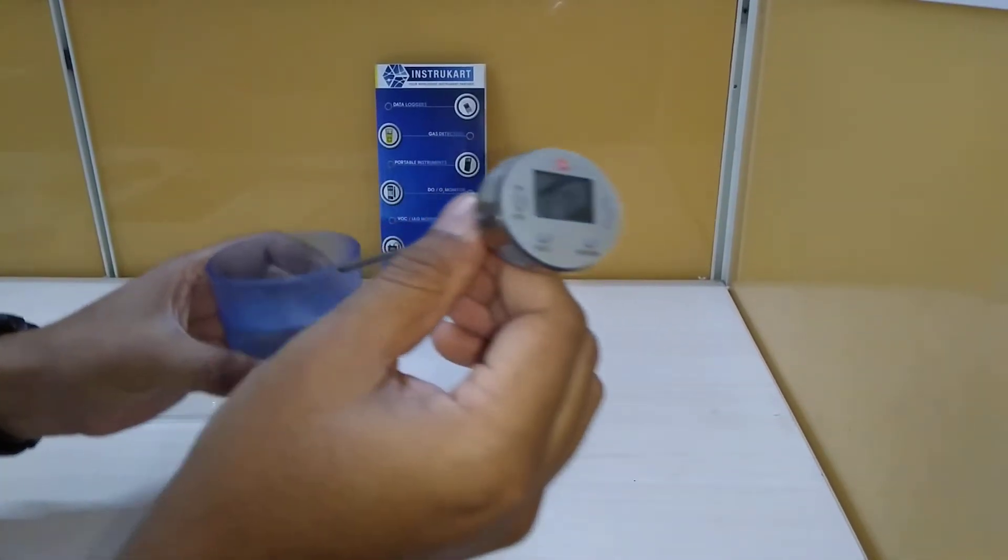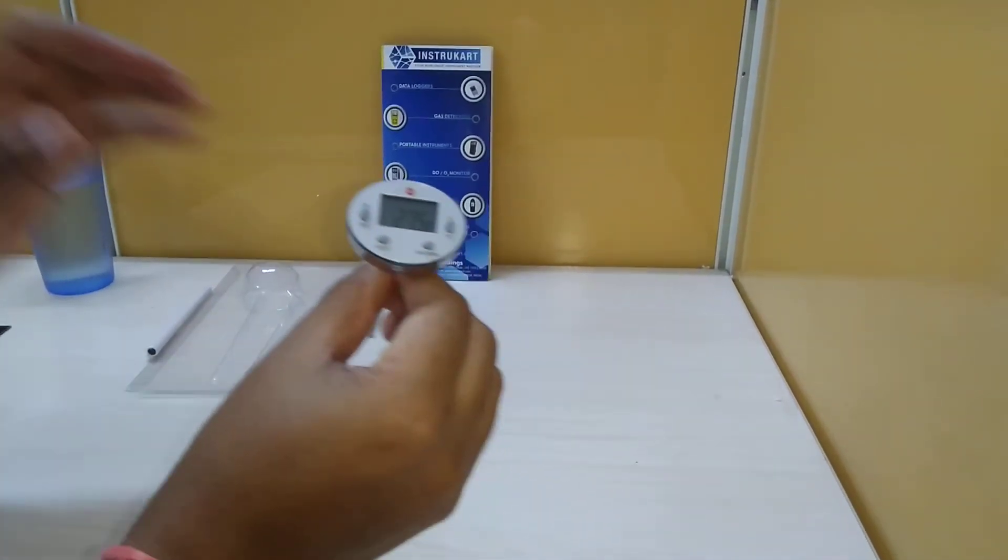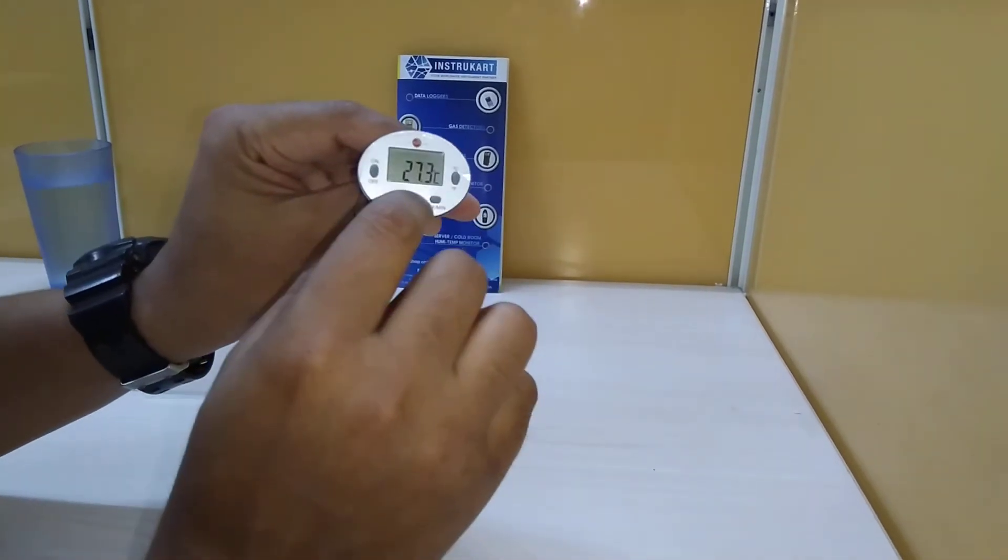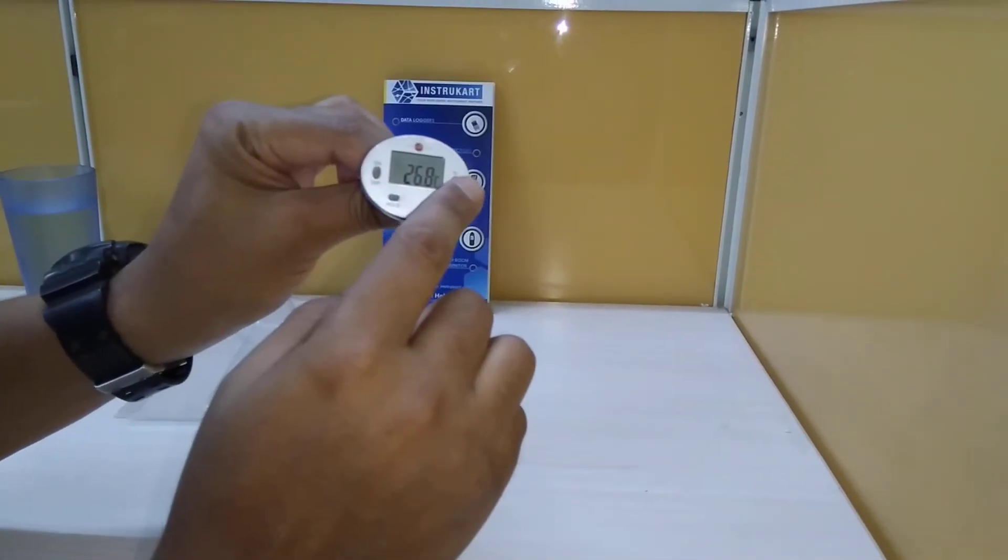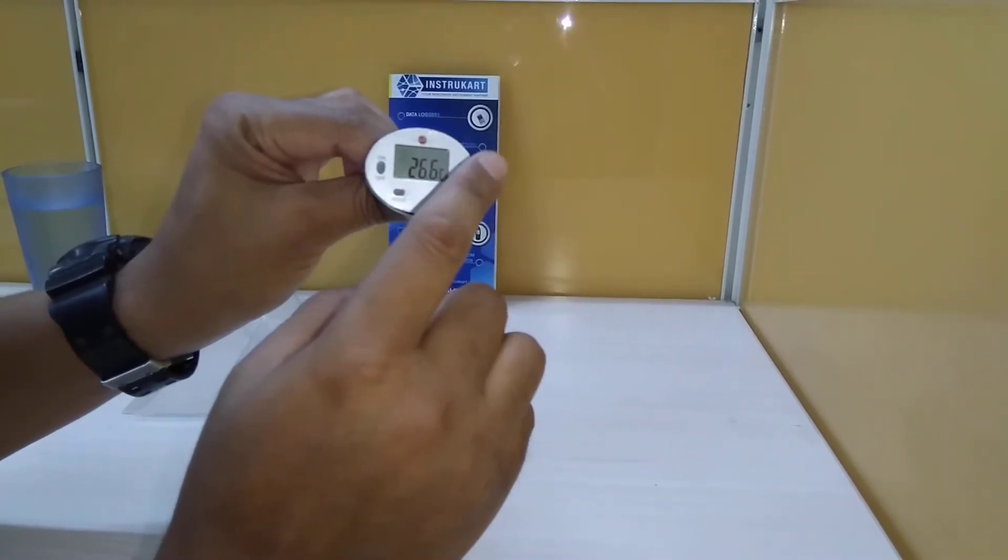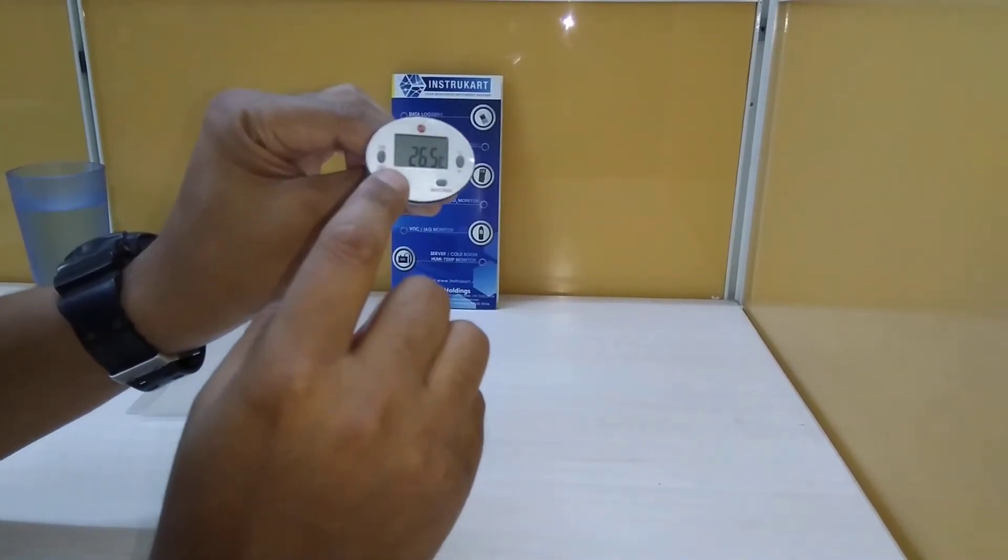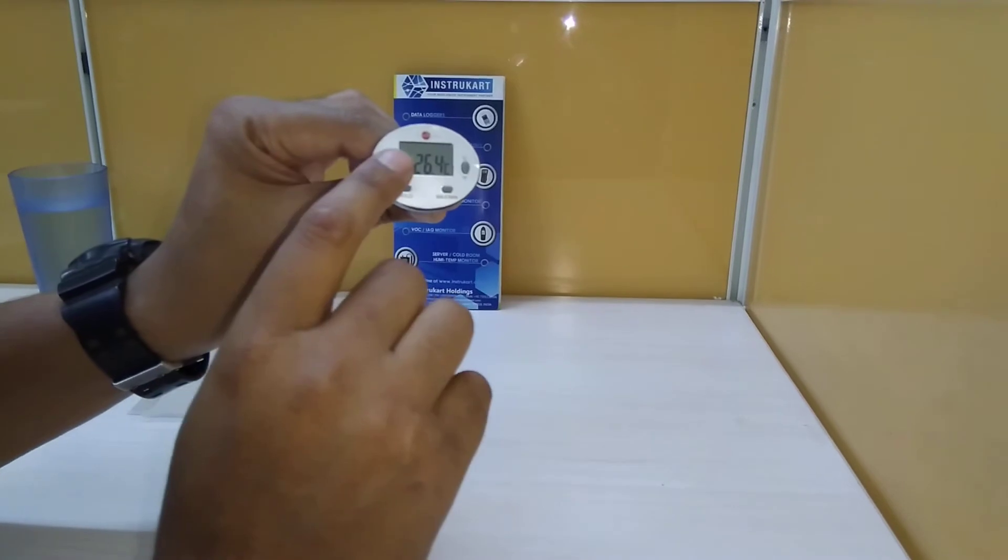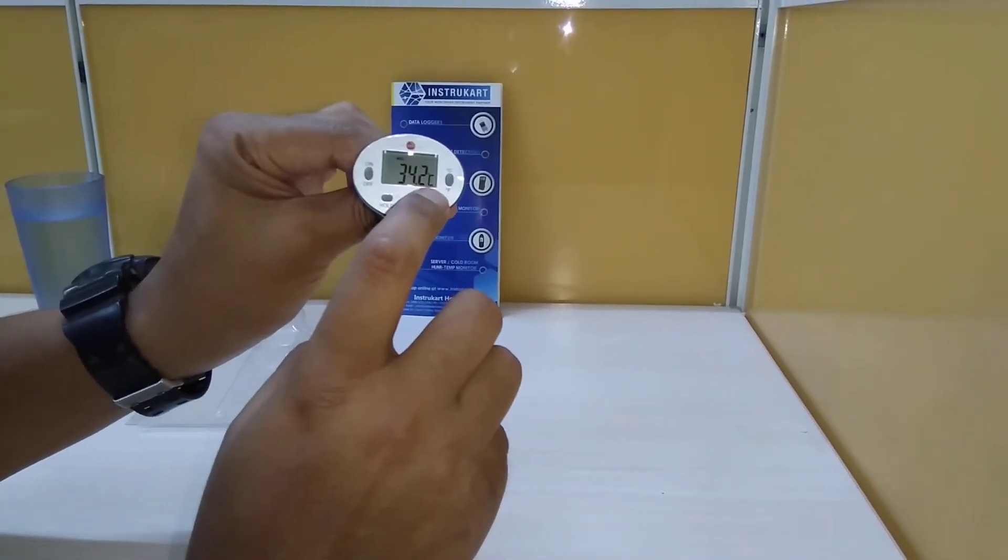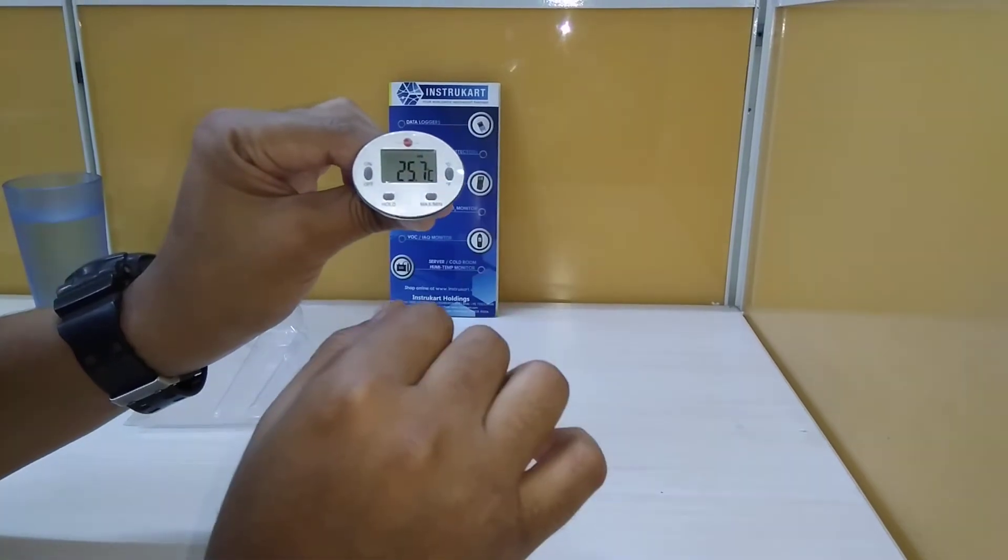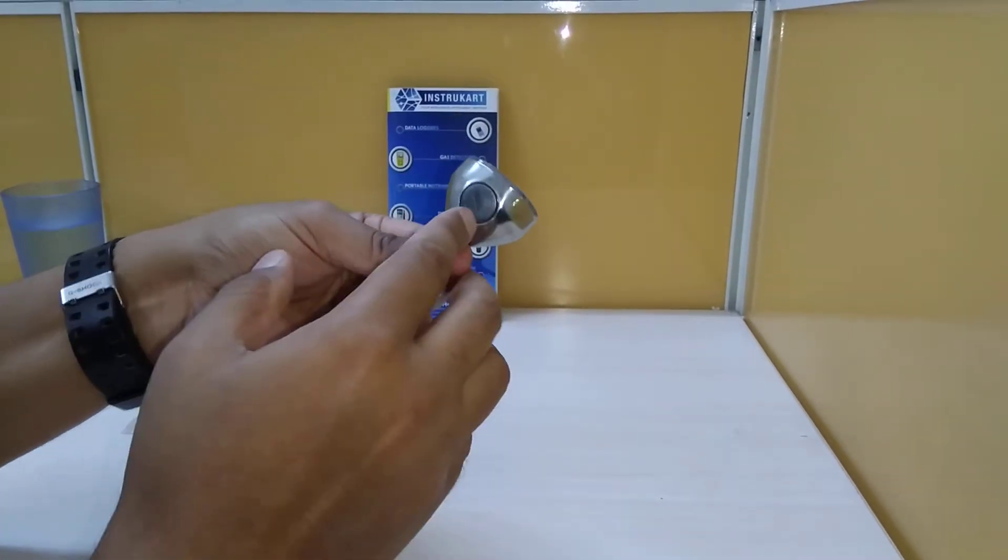This is the ideal way to do that. We have four buttons on top. This is the power button, this toggles between degrees Celsius and Fahrenheit, this is hold to hold the temperature, and this shows the max and minimum. Basic operations.